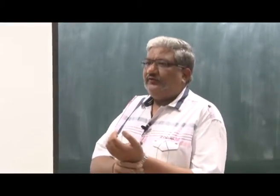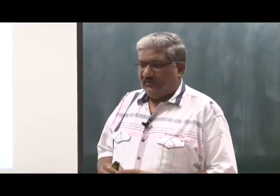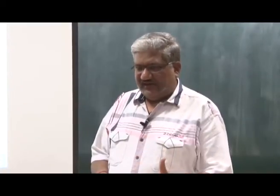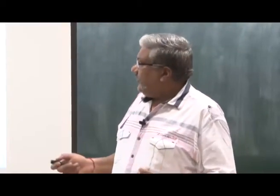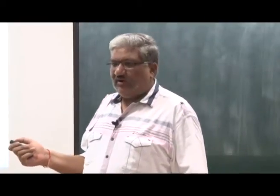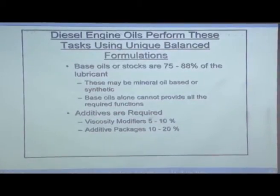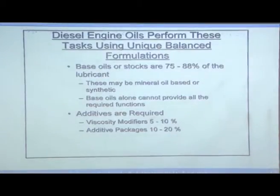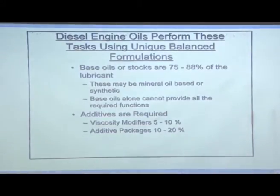The lubricating oil is composed of two main groups: one is called base oil or base stock, which is a refinery product. When fuel is taken out, whatever is left is a larger molecular weight substance which forms the bulk of the lubricating oil and provides lubricity. These could be mineral oil based or synthetic. From 75 to 88 percent of the volume is base stock; only 10 to 12 percent is additives.